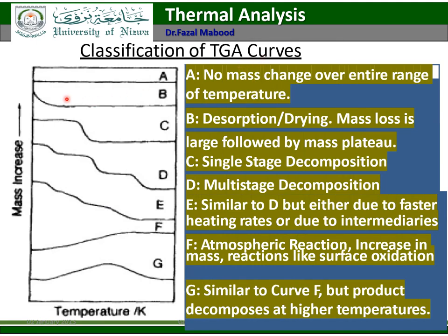Classification of TGA curves: Curve A shows no mass change over the entire range of temperature — it is flat. Curve B shows desorption or drying with a large mass loss followed by mass plateau. Curve C shows single stage decomposition with a weight loss step. Curve D shows multi-stage decomposition in separate steps. Curve E is similar to D but with faster heating rate or due to intermediaries. Curve F shows atmospheric reaction with increase in mass, like surface oxidation. Curve G is similar to F but the product decomposes at higher temperature — first increase and then decomposition starts.